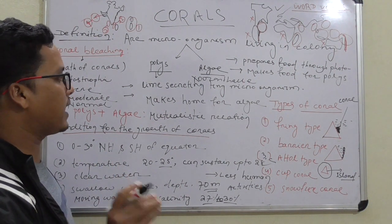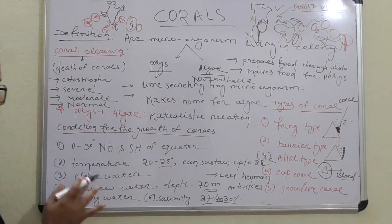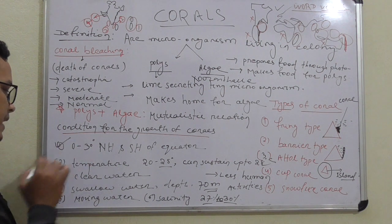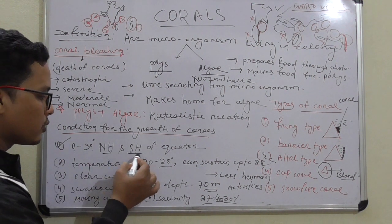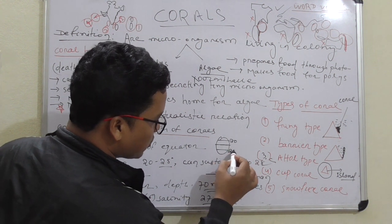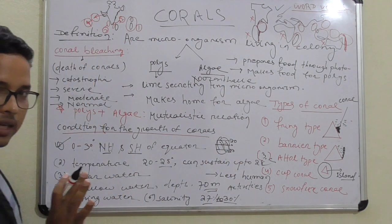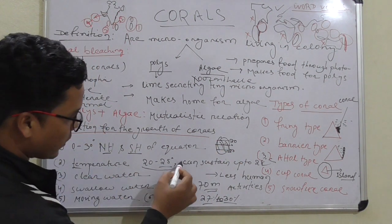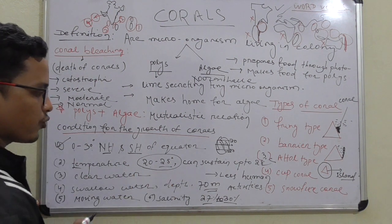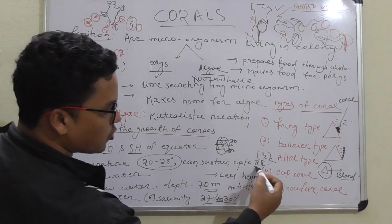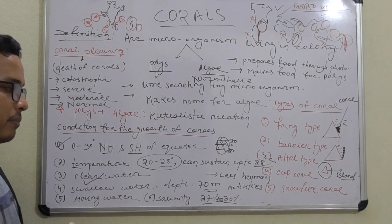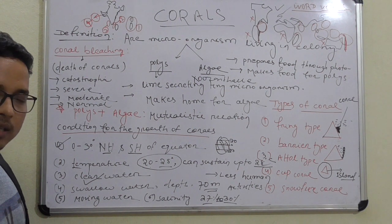Now the conditions for the growth of corals. First is latitude: 0 to 30 degrees in the northern hemisphere and 0 to 30 degrees in the southern hemisphere. This is the region where corals are formed, because the temperature there is 20 to 25 degrees Celsius — corals can sustain up to 28 degrees. Next is clear water: water should be free of sediment, otherwise it blocks the digestive system of the corals and can lead to death and fungal diseases.